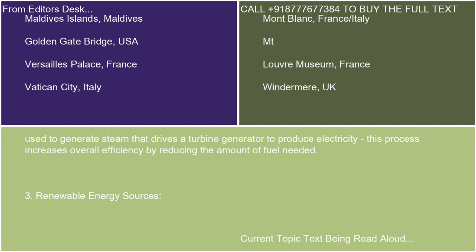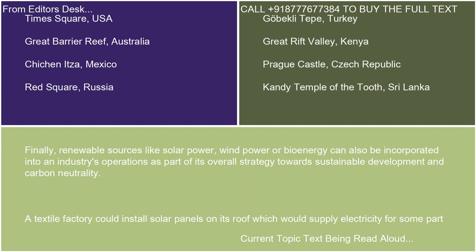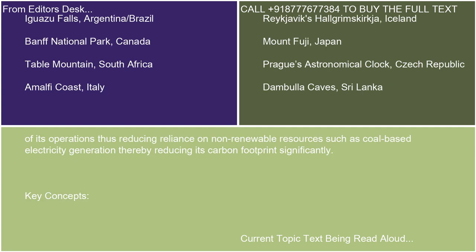Finally, renewable sources like solar power, wind power, or bioenergy can also be incorporated into an industry's operations as part of its overall strategy towards sustainable development and carbon neutrality. A textile factory could install solar panels on its roof which would supply electricity for some part of its operations, thus reducing reliance on non-renewable resources such as coal-based electricity generation, thereby reducing its carbon footprint significantly.